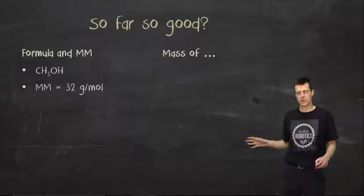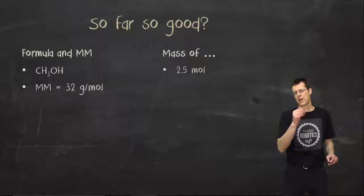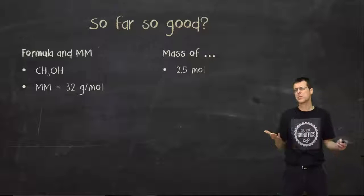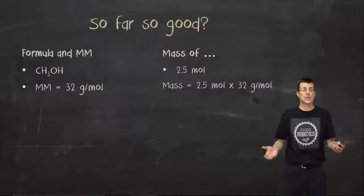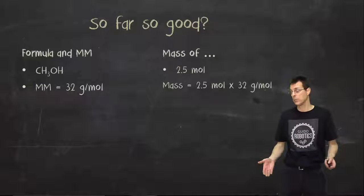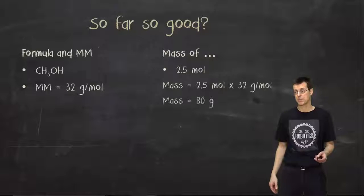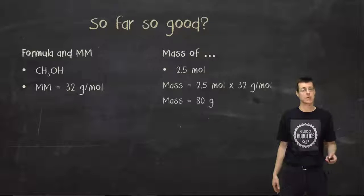You've got CH₃OH, and we know that's got a molar mass of 32 grams per mole. What if I had 2.5 moles of that stuff? Well, each mole has a mass of 32 grams, so 2.5 of them would have a mass of that number of moles times the molar mass, which in this case would end up being 80 grams.